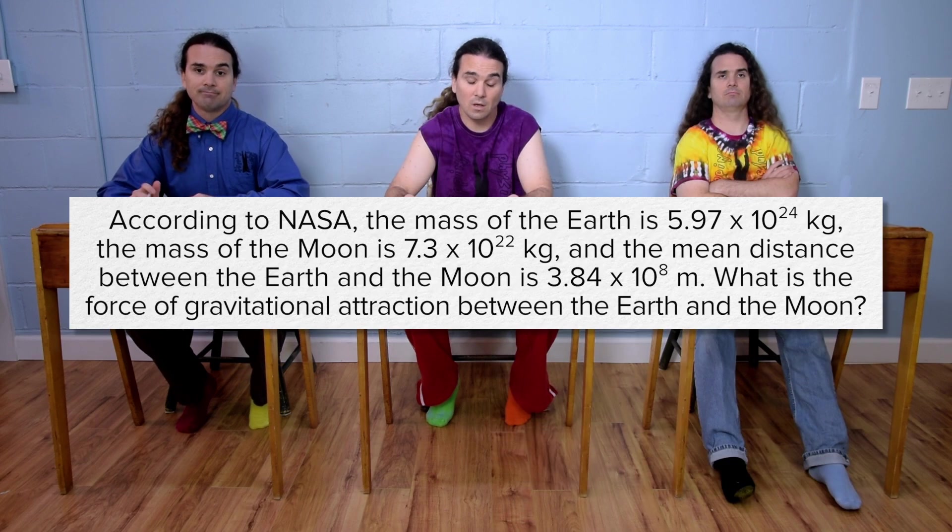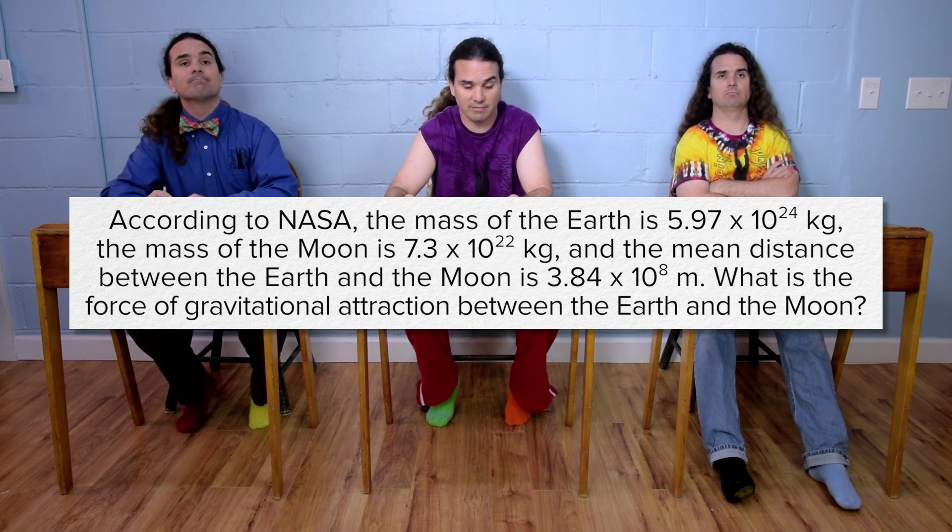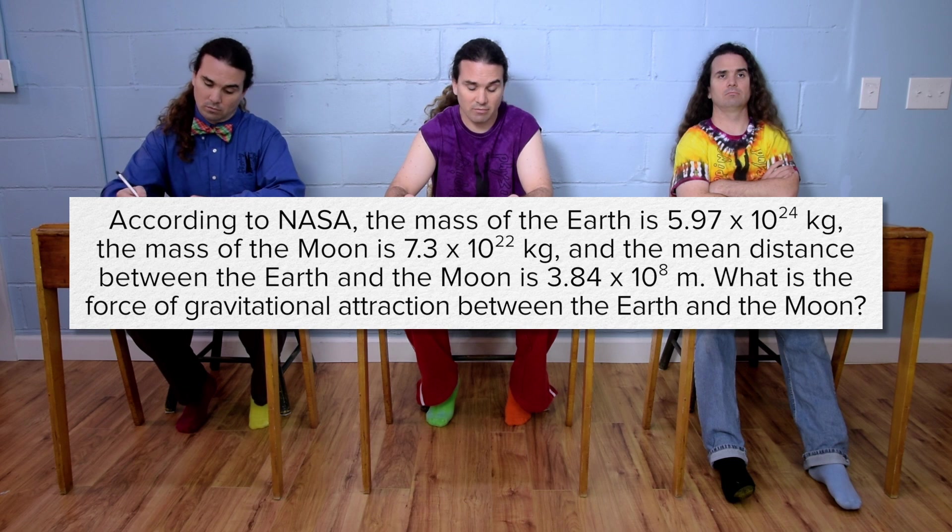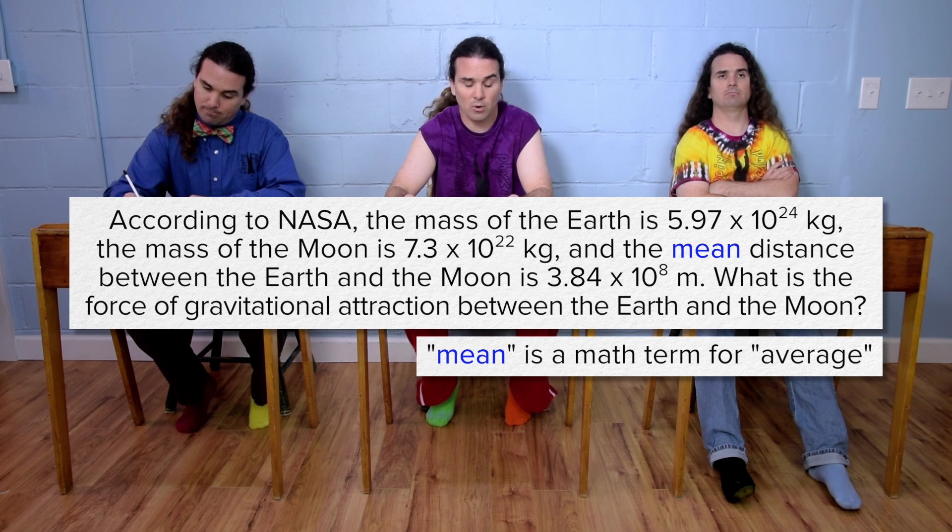Flippin' Physics! According to NASA, the mass of the Earth is 5.97 times 10 to the 24th kilograms, the mass of the Moon is 7.3 times 10 to the 22nd kilograms, and the mean distance between the Earth and the Moon is 3.84 times 10 to the 8th meters. Stop.